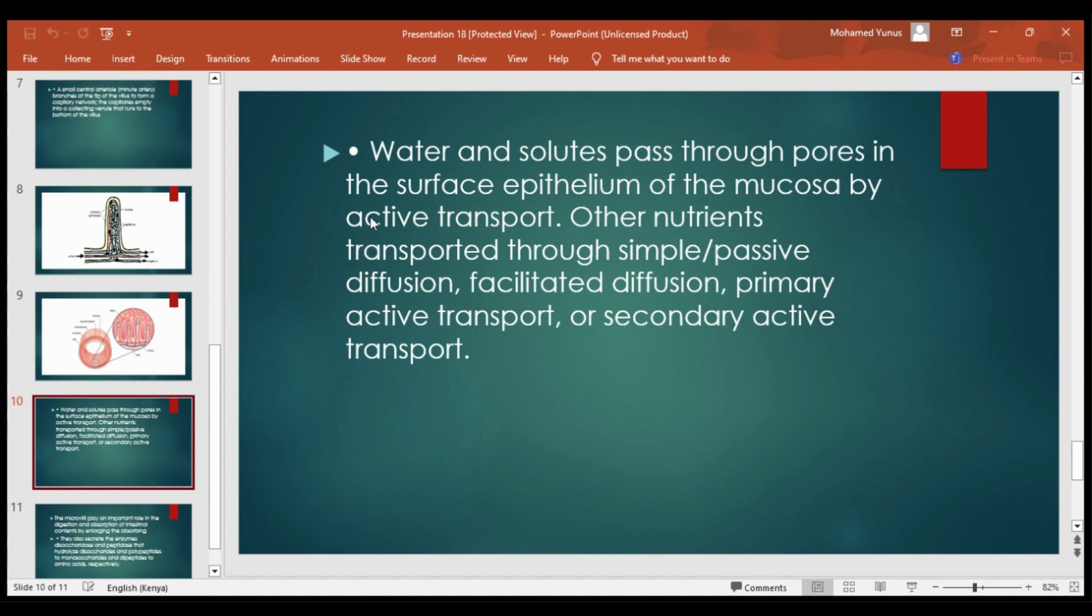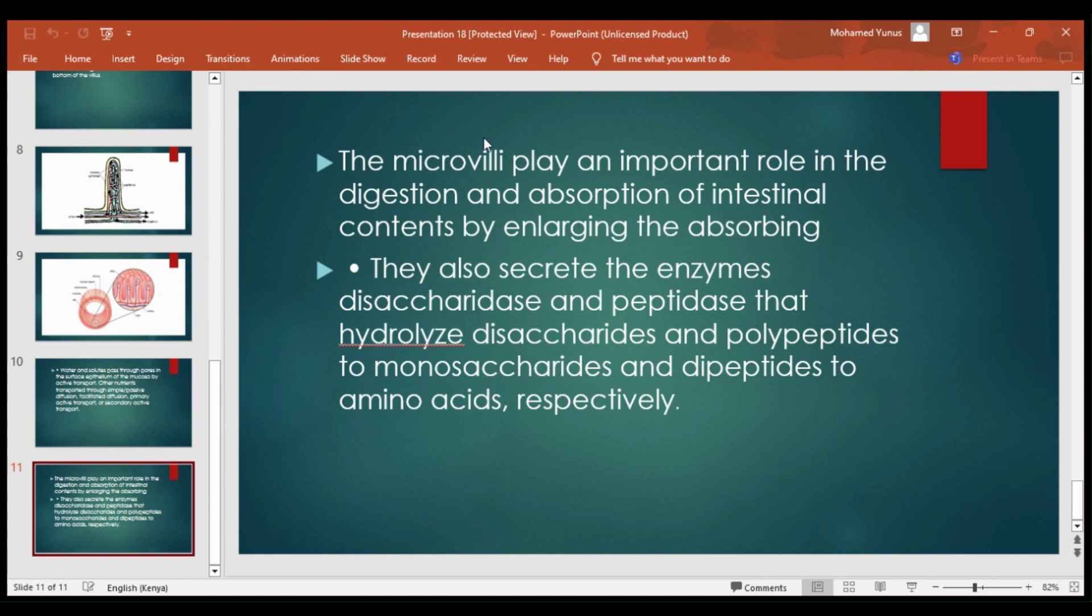Water and solutes pass through the pores in the surface epithelium of the mucosa by active transport, and other nutrients are transported through simple or passive diffusion, facilitated diffusion, primary active transport, or secondary active transport.